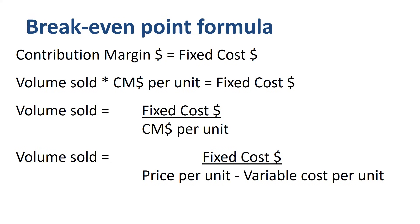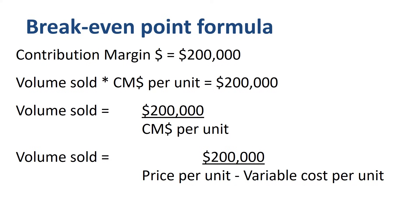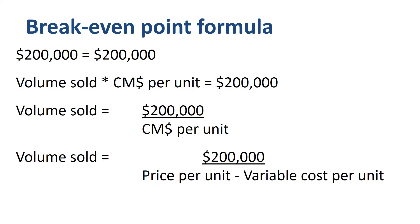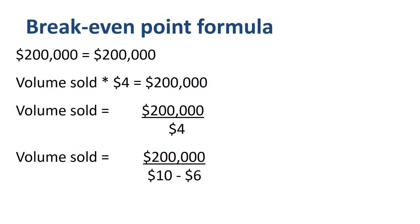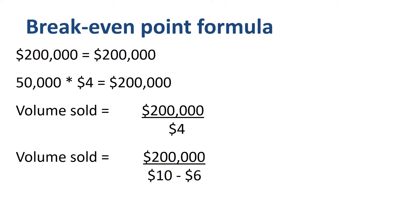Let's fill in the numbers to illustrate. $200,000 of fixed costs — the business needs $200,000 in contribution margin to cover that $200,000 in fixed costs. At $4 contribution margin per unit ($10 selling price per unit minus $6 variable cost per unit), the volume sold needs to be 50,000 units.